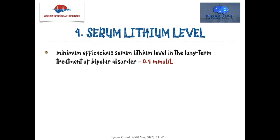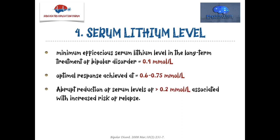What is the optimal level for optimal response when starting treatment? That level is between 0.6 and 0.75. An interesting fact: after what drop in serum level is a patient at increased risk of relapse? If there is an abrupt reduction in serum level of more than 0.2, the patient is at increased risk of relapse into mania, depression, or a mixed episode.